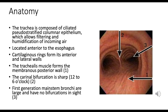The trachea is a tubular structure connecting the larynx to the bronchi of the lungs. Its innermost layer is lined with ciliated pseudostratified columnar epithelium containing hair-like cilia and mucus-producing goblet cells. The coordinated movement of cilia with mucus helps trap dust particles and microorganisms, moving them upward towards the pharynx, aiding in filtering and humidifying incoming air.